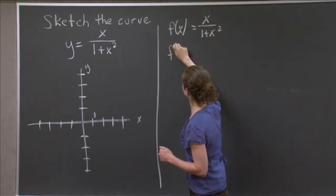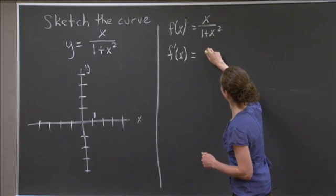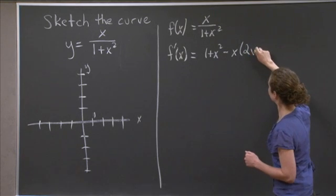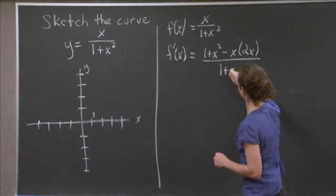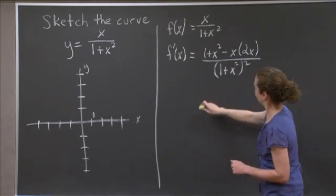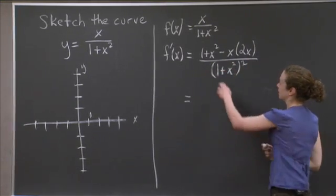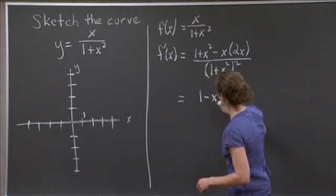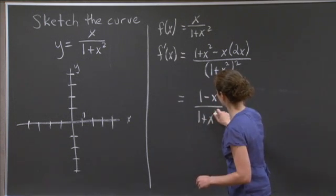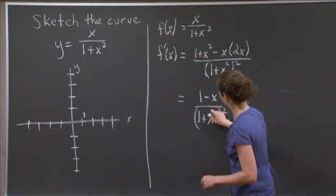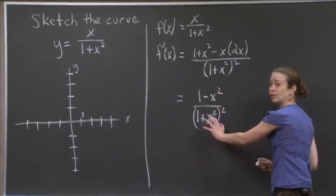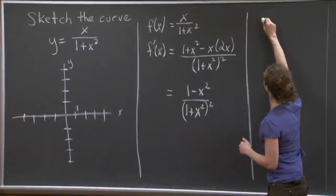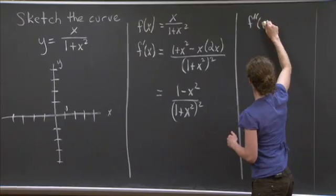So let's let f of x equal x over 1 plus x squared. Then f prime of x — using the quotient rule — we get 1 plus x squared minus x times 2x, all over 1 plus x squared squared. Simplifying, the x squared minus 2x squared gives us a 1 minus x squared in the numerator, over 1 plus x squared quantity squared.